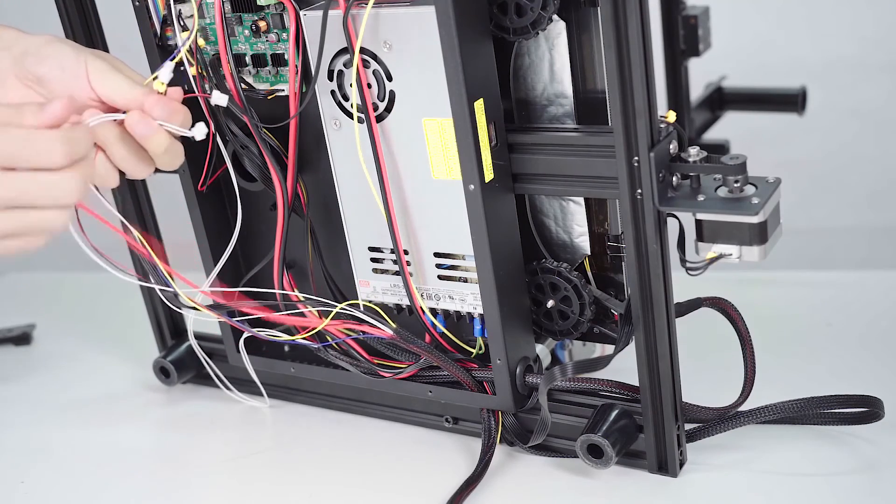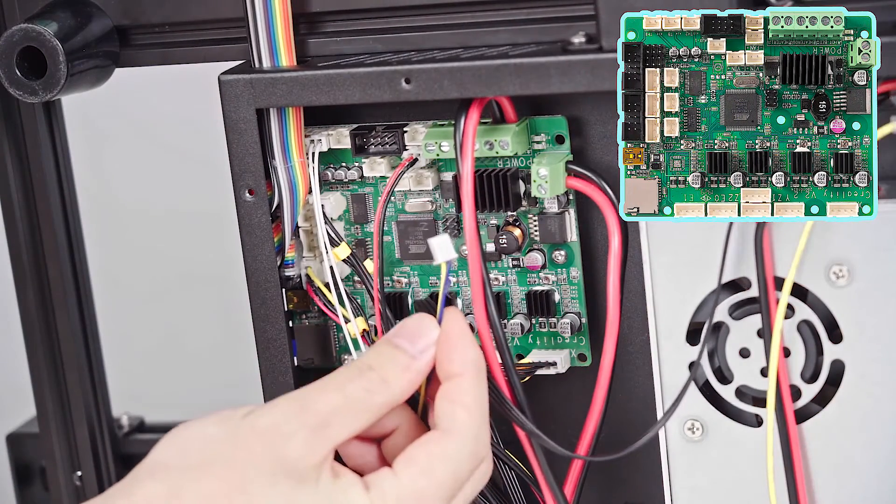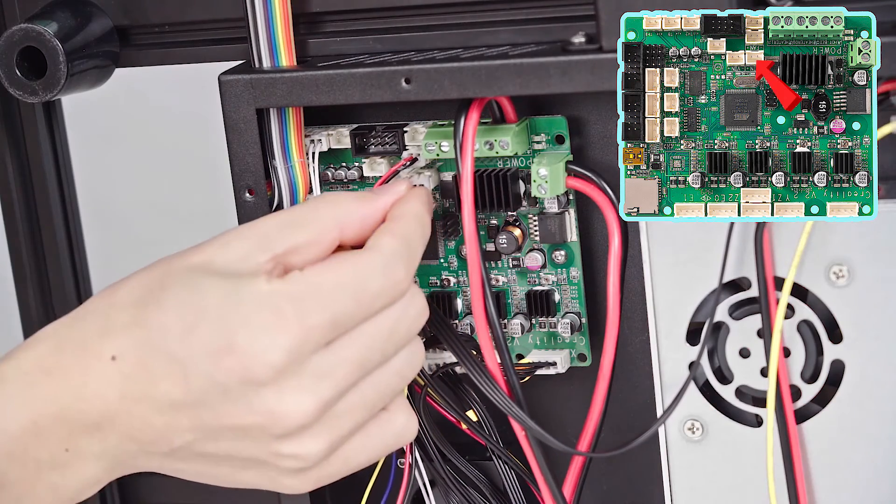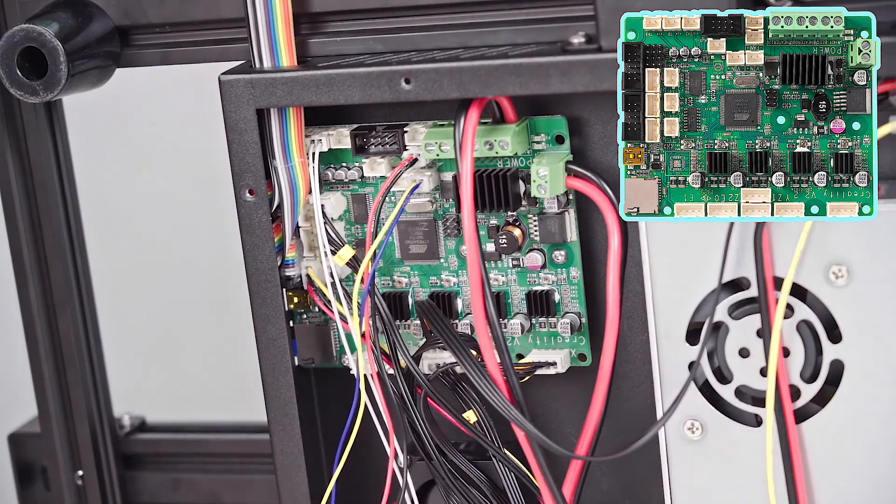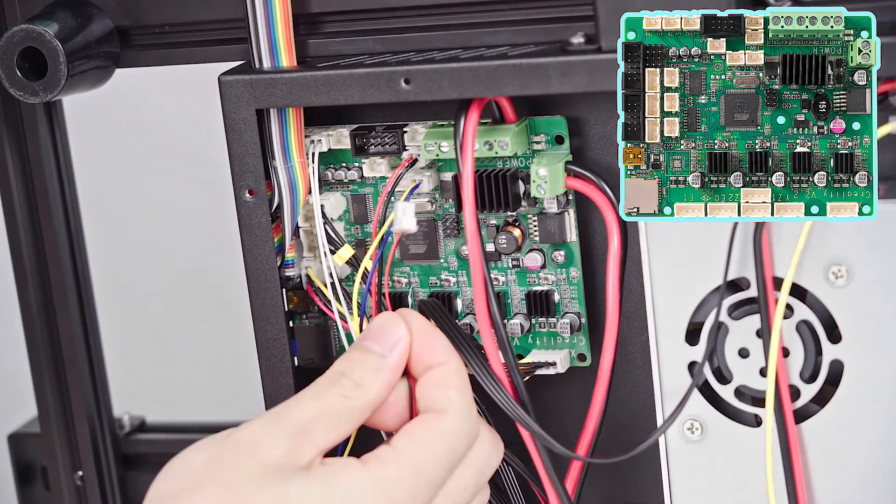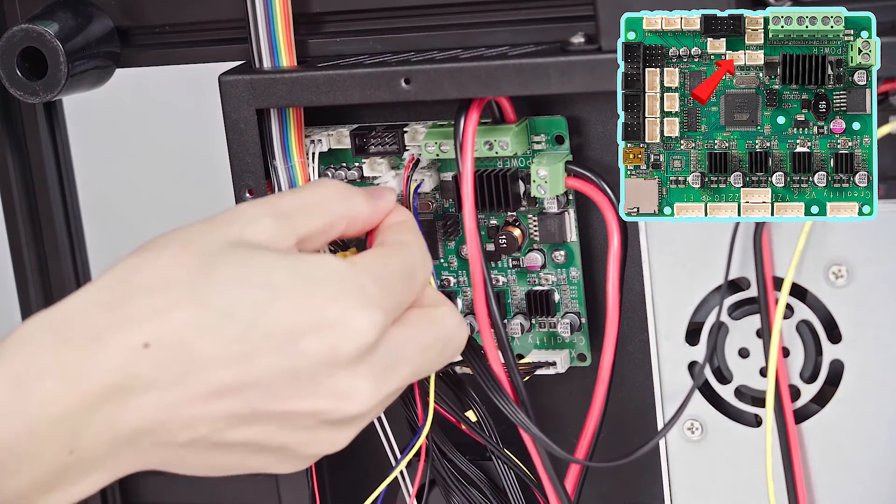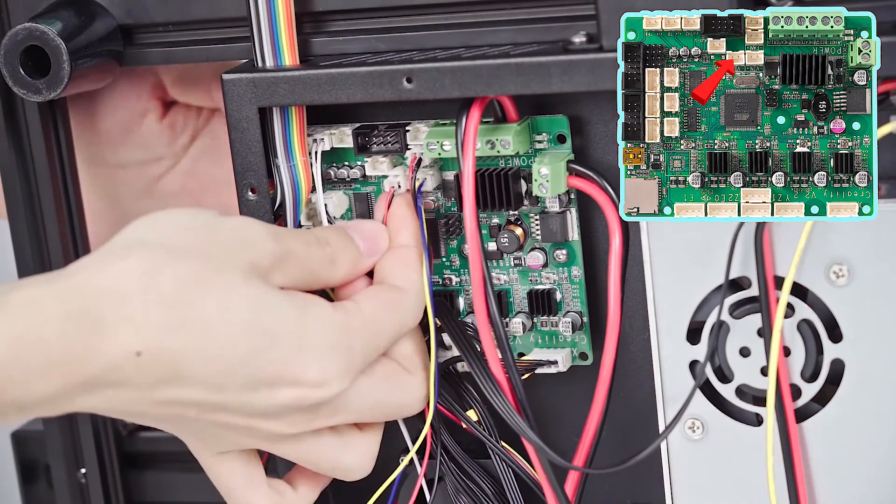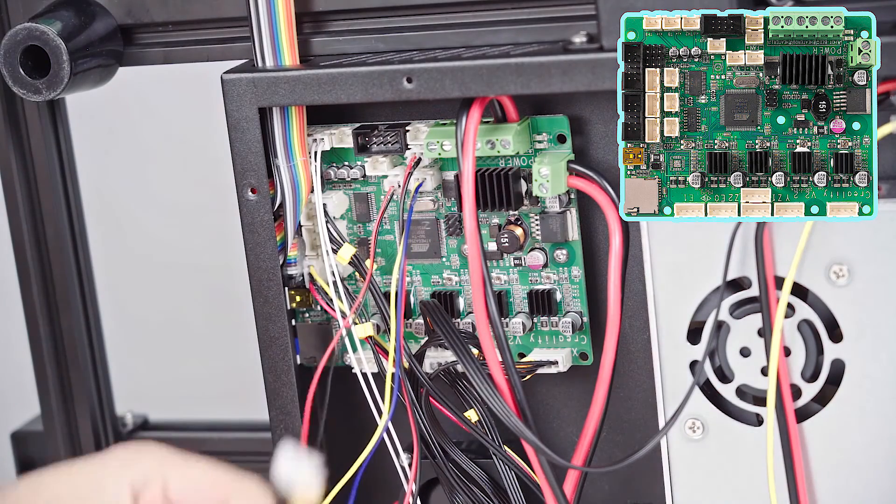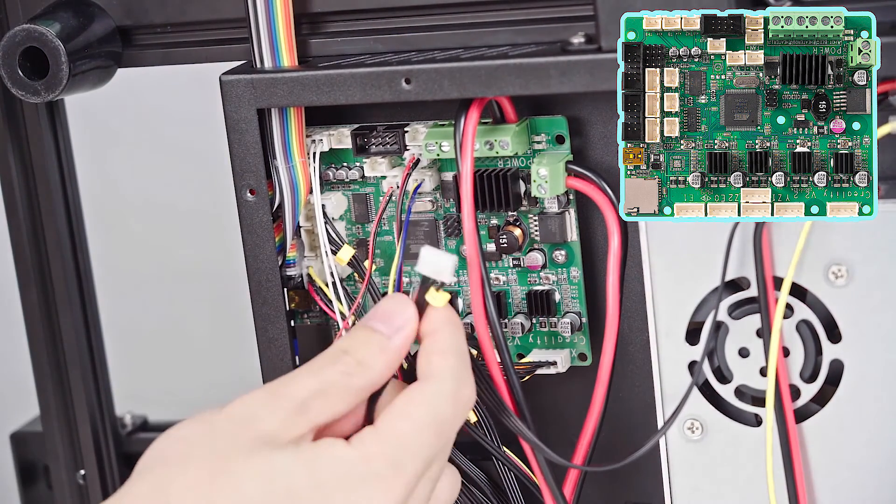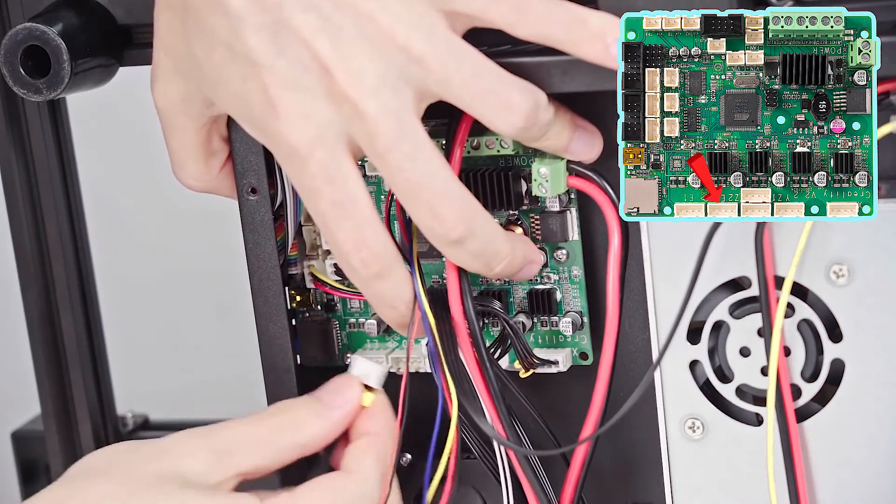We need to connect five different cables to the main board. First, we're going to connect the one with the yellow and blue to the control board fan. Then the one with red and black is connected to the fan. Then the one he holds in his hand is going to connect to E0 motor.